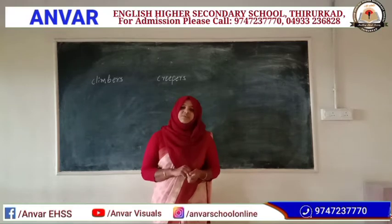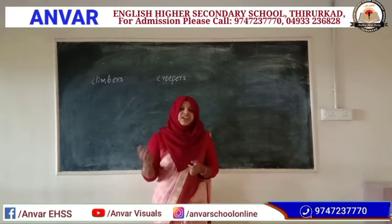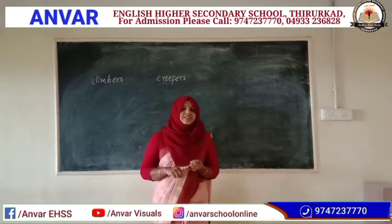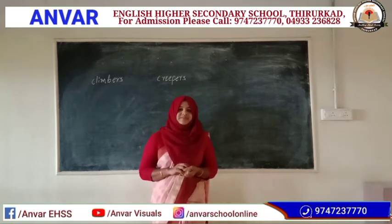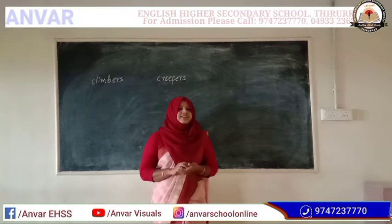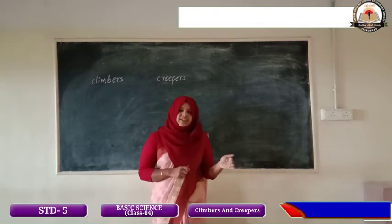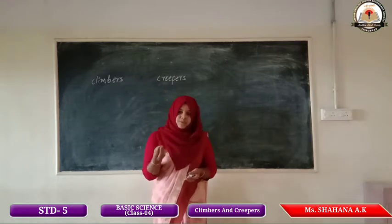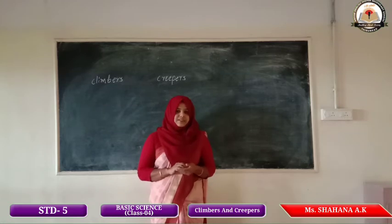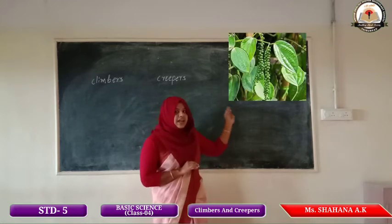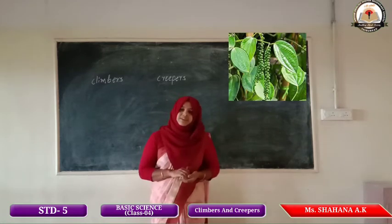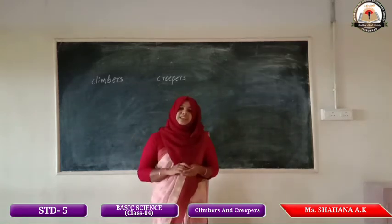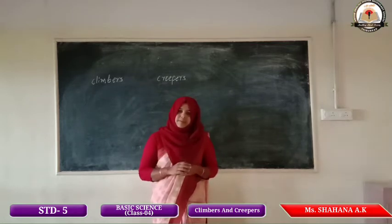Can you give some examples for climbers? There are many types of climbers around us — bitter gourd, ash gourd, etc. In some climbers we can see tendrils, and some other climbers have another type of root known as clinging roots. Pepperwineis a climber which has clinging roots.